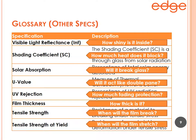To simplify the other specs: interior VLR is how shiny is it inside; shading coefficient like SHGC is how much heat does it block; solar absorption answers whether this film on this glass will cause the glass to break; U-value addresses whether single pane glass will act like double pane; UV rejection is what customers really want to know about when asking about fading; film thickness; tensile strength (at what stress will the film break); and elongation at break (at what stress will it stretch irreversibly). All important, but not as critical as the focus specs.